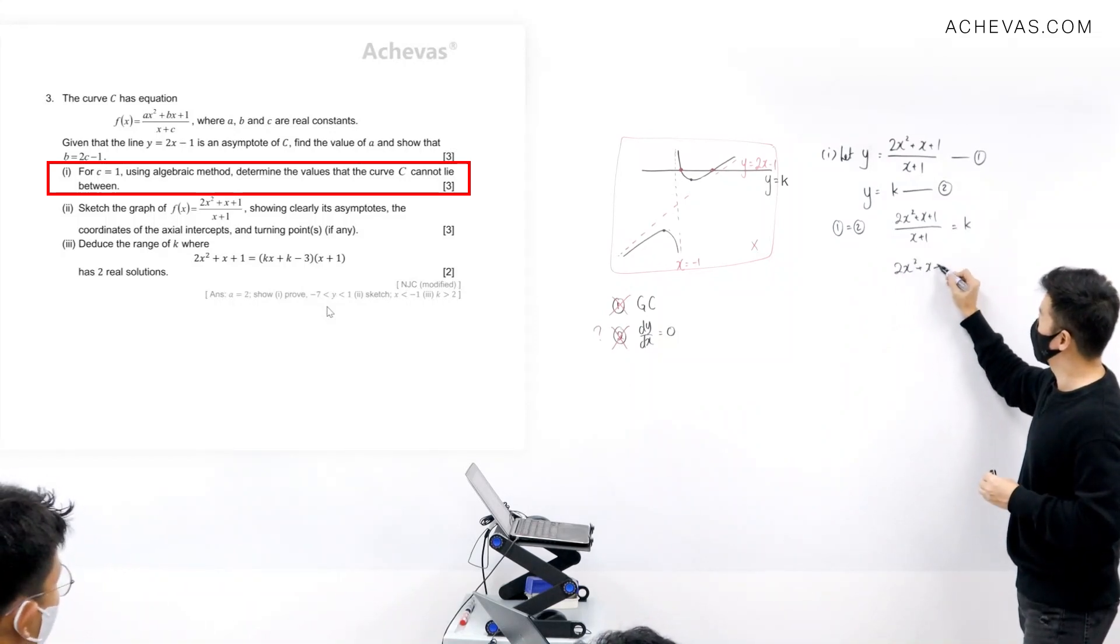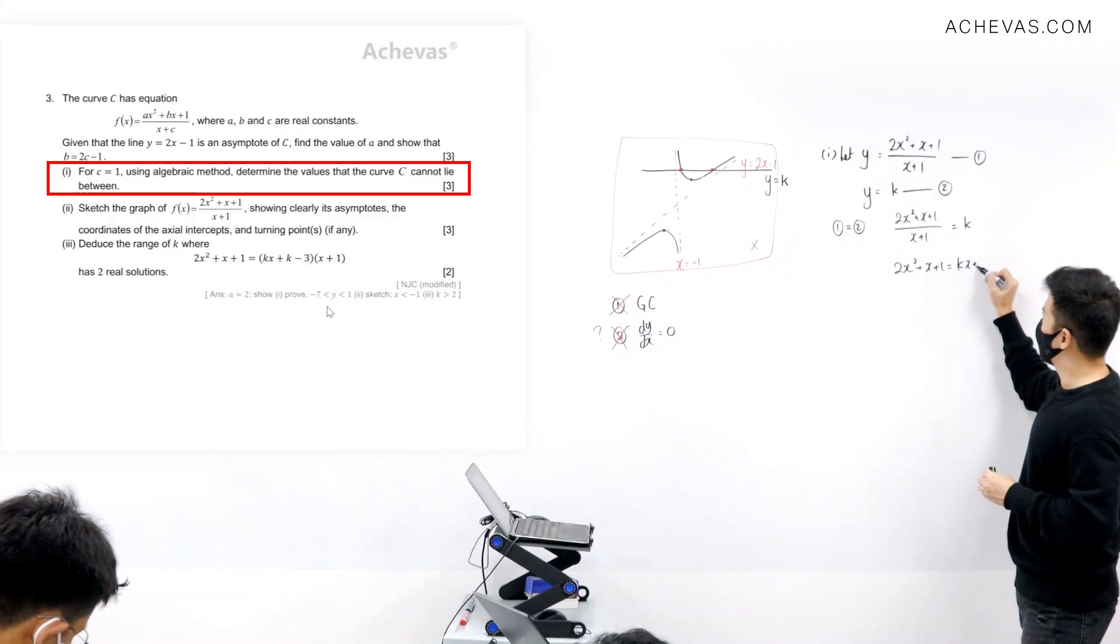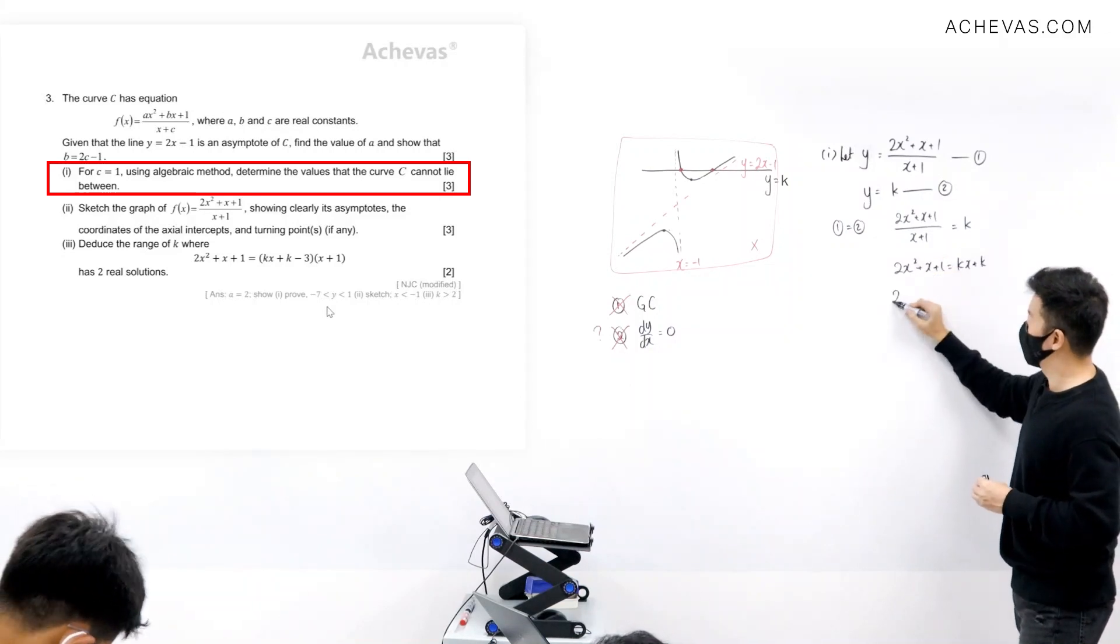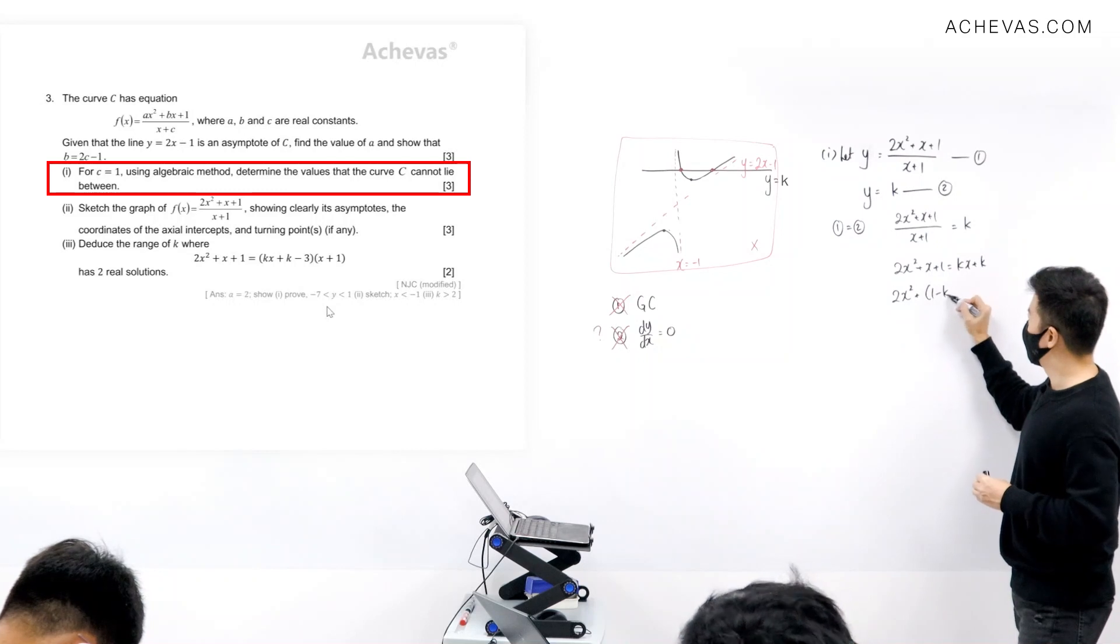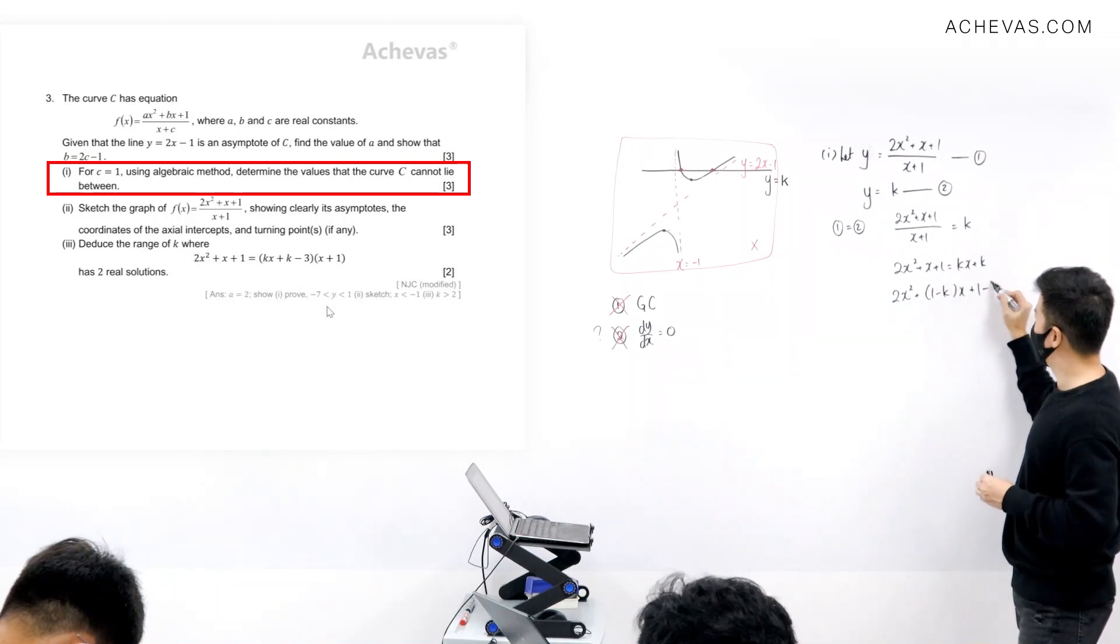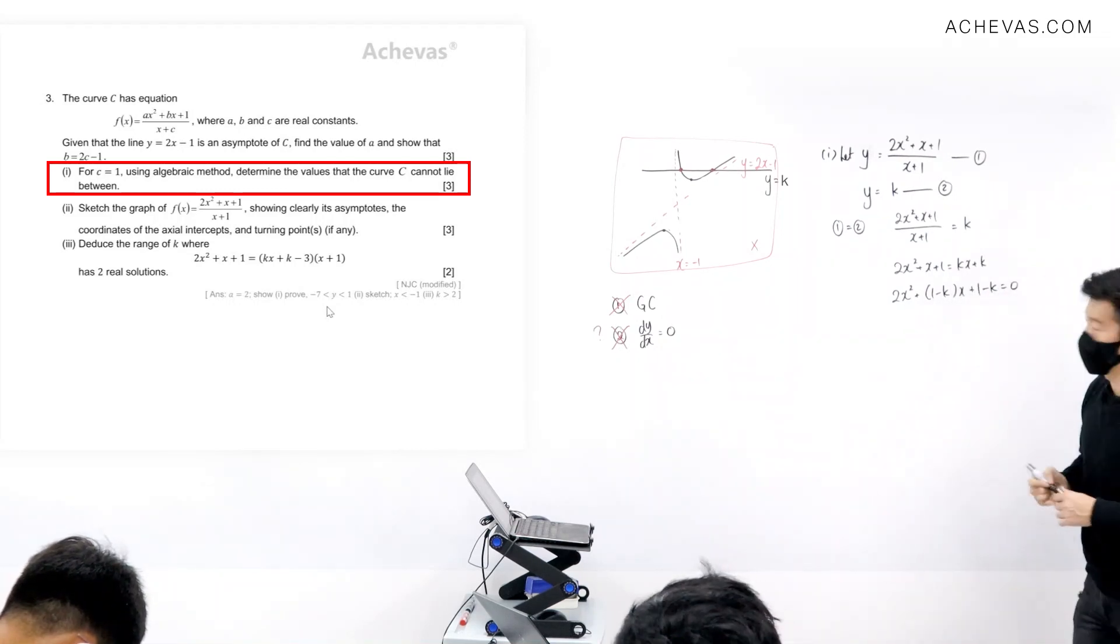We have 2x squared plus x plus 1. This is kx plus k. Let's bring everything over to the left-hand side. We have 2x squared plus 1 minus kx plus 1 minus k. This is equal to 0.